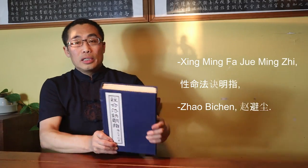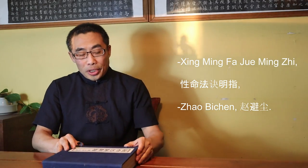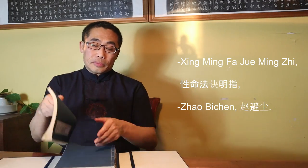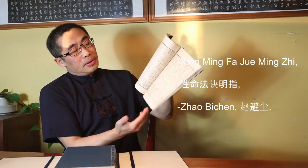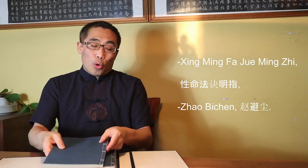By the way, this document titled Xing Ming Fa Jue Mingzhi, written by Zhao Bi Chen, published about 90 years ago, points out that Zu Chiao is the fixed inside place between two eyes. Now let's talk about the second fixed area, which is the upper stomach area. Please keep in mind that Zu Chiao is actually the inside of the upper abdomen area, not on the surface.